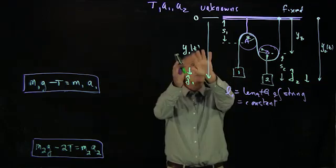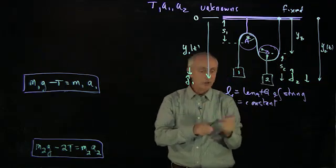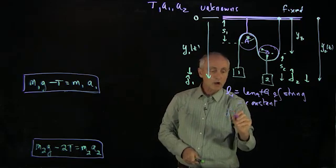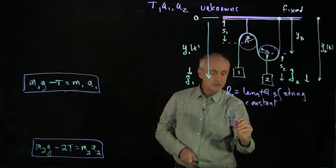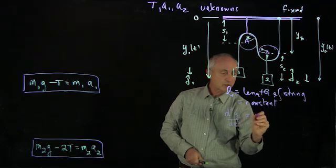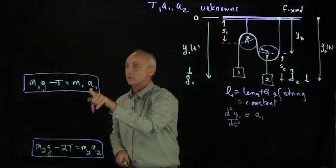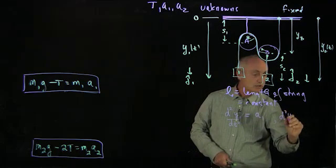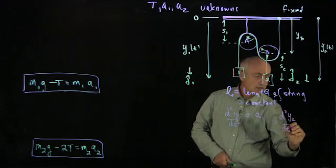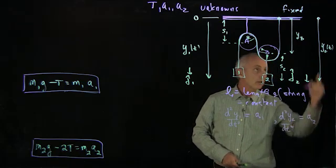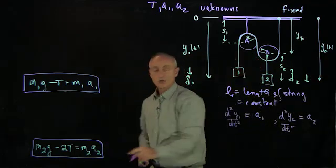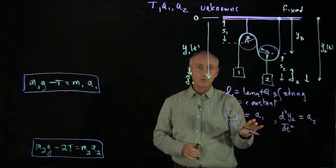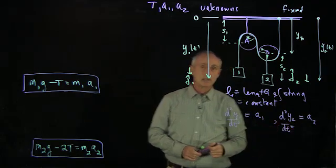When we define these coordinate functions in this fashion, we know that the second derivative, d squared y1 dt squared, this is precisely what we mean by the acceleration of object 1. And in a similar fashion, d squared y2 dt squared is what we mean by the acceleration of object 2. So we've introduced a coordinate system. We've made it very clear what we mean by the accelerations of a1 and a2.